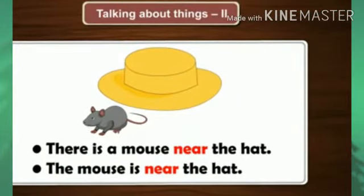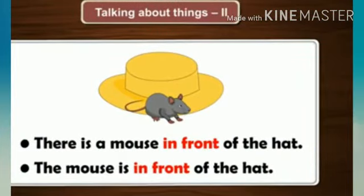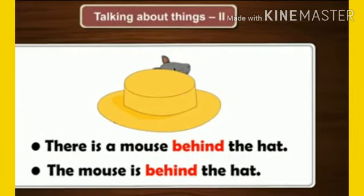Look at this picture: there is a mouse under the hat, or the mouse is under the hat — under manja cha khali. Look at this picture: there is a mouse near the hat, or the mouse is near the hat. Look at this picture: there is a mouse in front of the hat, or the mouse is in front of the hat — in front of manja cha samor. Look at this last picture: there is a mouse behind the hat. The mouse is behind the hat — behind manja maage.